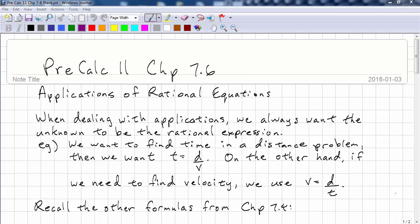This is Pre-Calc 11, Chapter 7.6. Now we're going to look at applications of rational equations. When dealing with the applications, we always want the unknown to be the rational expression.